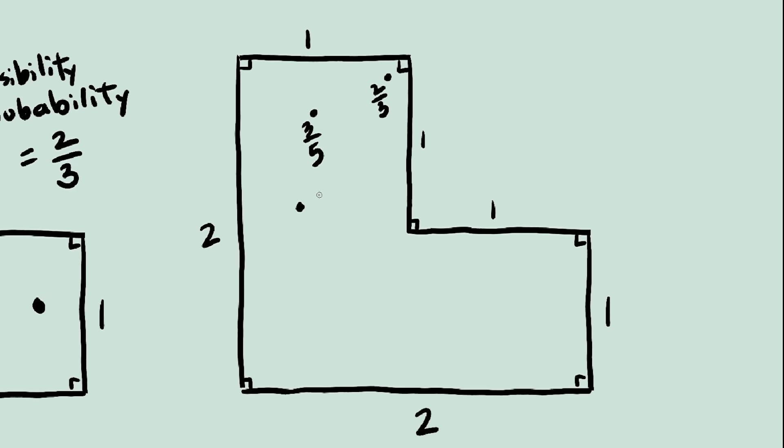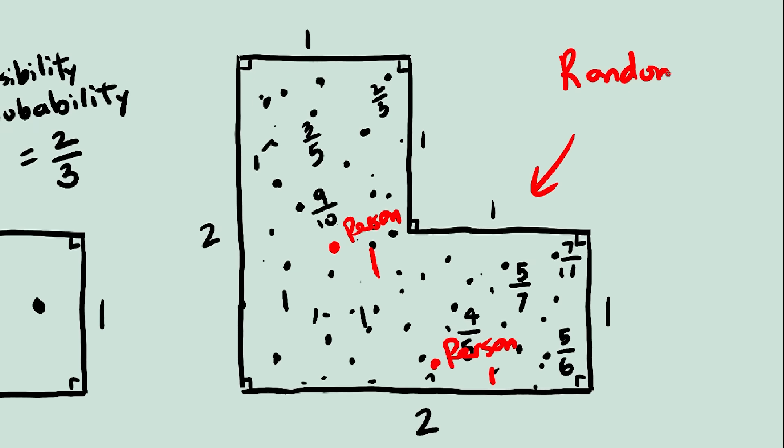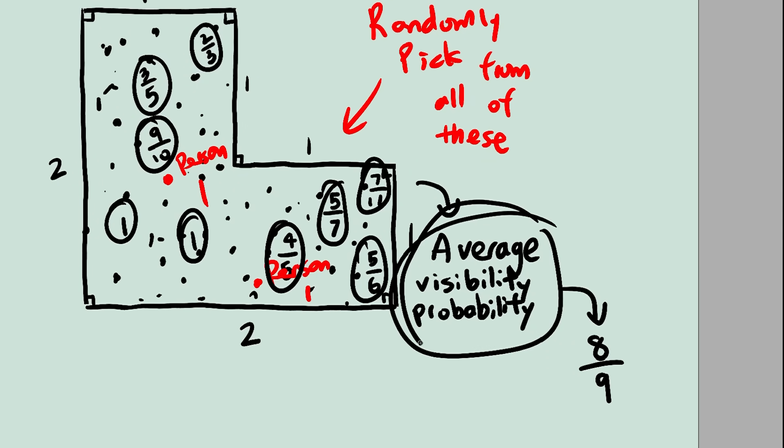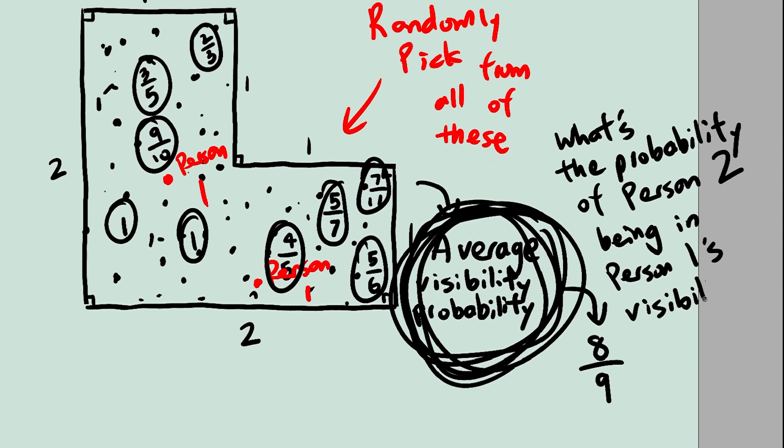Now theoretically, you could find the visibility probability for every point, everywhere in this shape. And since person 1's random location will be a random point chosen out of all of these, you could just average up all the numbers to find the average probability of visibility. This would be your answer because that's what the puzzle is looking for. What's the probability of visibility?